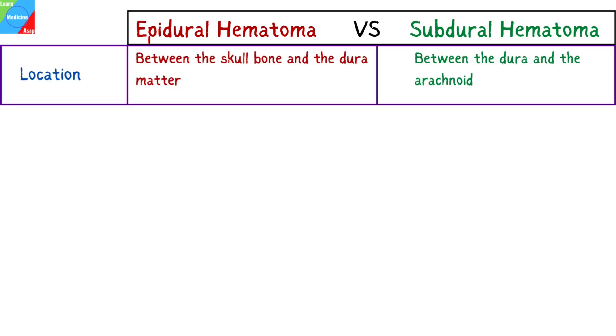For the location, the extradural or epidural hematoma occurs between the skull bone and the dura mater, while for the subdural hematoma, the location is between the dura and the arachnoid.